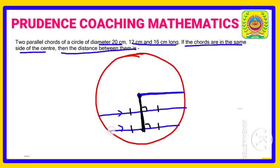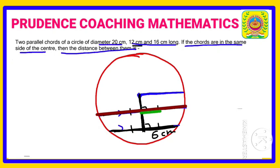The smaller chord is 12 centimeters, so the perpendicular bisects it into 12 divided by 2, which is 6 centimeters on each side. The larger chord is 16 centimeters, and the perpendicular bisects it into 16 divided by 2, which is 8 centimeters on each side. So we have half-lengths of 6 centimeters and 8 centimeters.